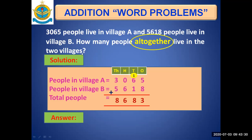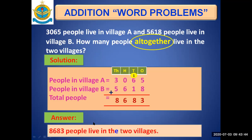Write the answer statement as the last line. Since the question asks 'how many people all together live in the two villages,' replace 'how many' with the answer and remove the question mark. The answer statement is: eight thousand six hundred and eighty-three people live in the two villages all together.